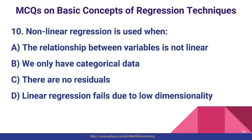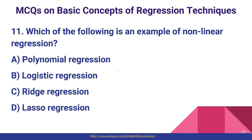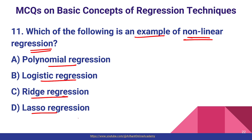Question number ten: non-linear regression is used when the relationship between variables is not linear — option A is the correct answer by default. Question number eleven: which of the following is an example of non-linear regression? The options are polynomial regression, logistic regression, ridge regression, or lasso regression. Polynomial regression is non-linear because its degree in the polynomial formula makes it non-linear, so option A is the correct answer.